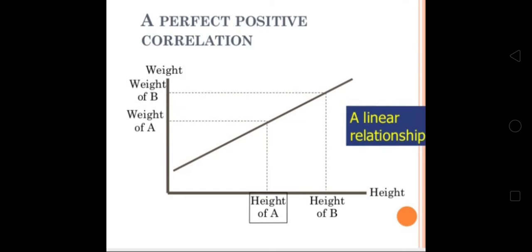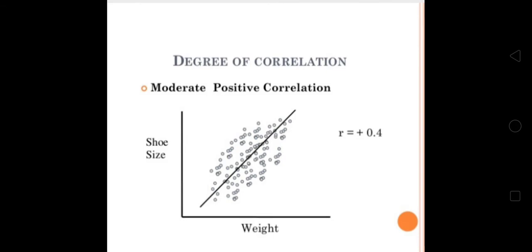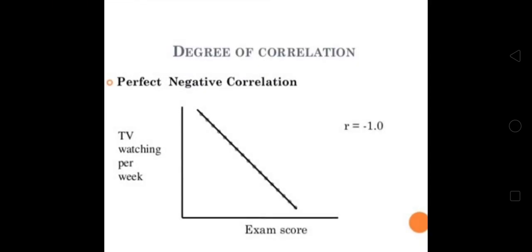When perfect positive correlation is there, the line will be straight upward. When there is a high degree of positive correlation, the direction of the variables will be towards positive but not on the same line. Moderate positive relation will be varying up and down of the central line. Perfectly negative correlation is again there.